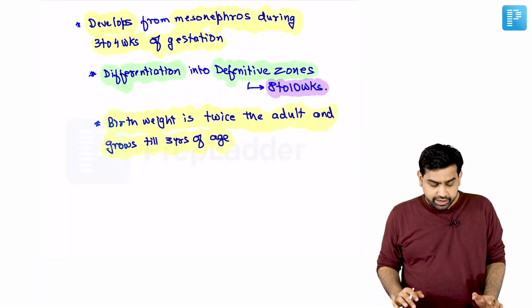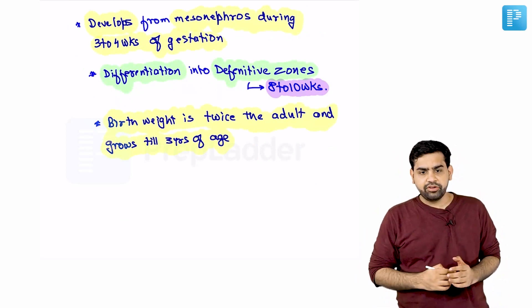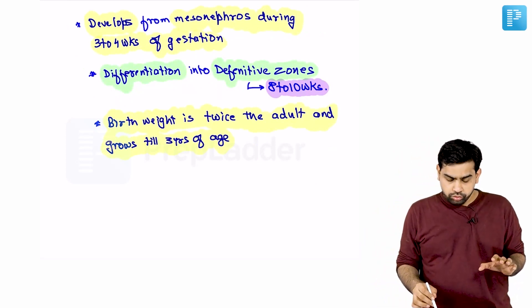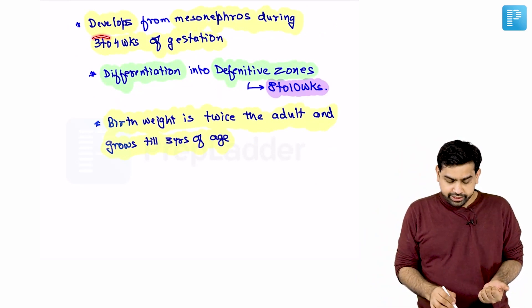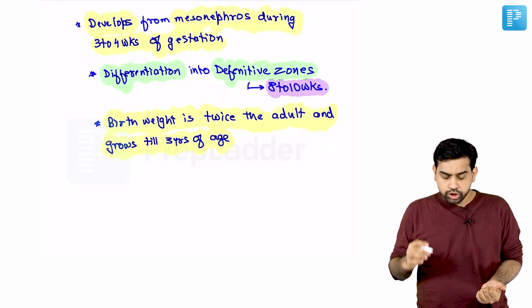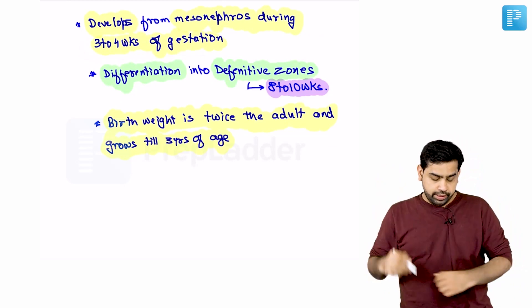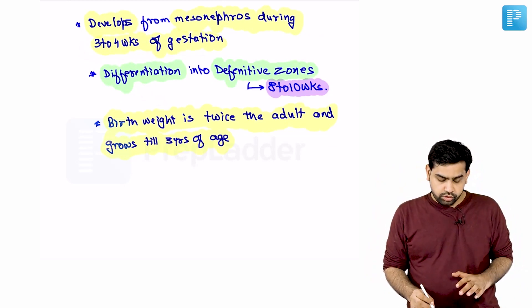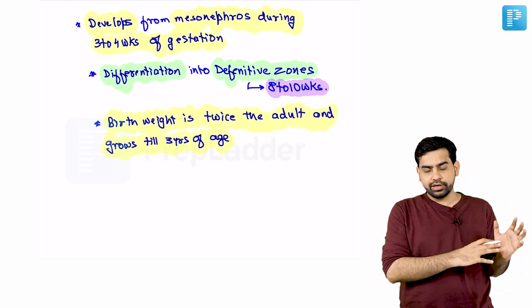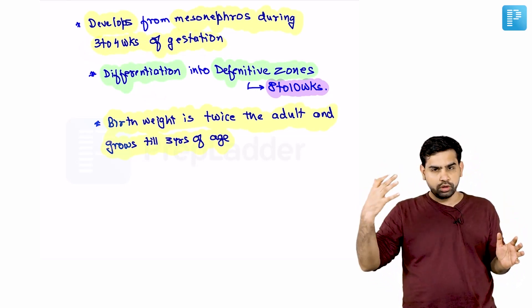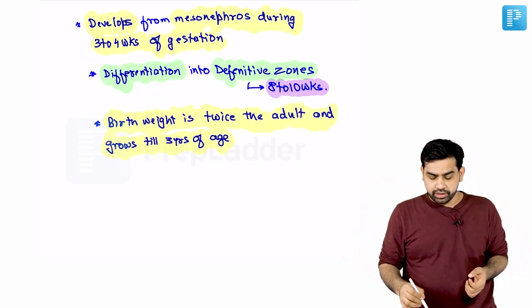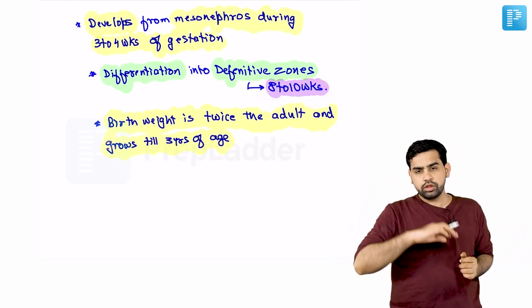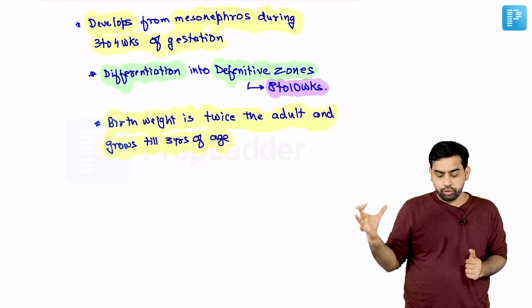The adrenal gland basically develops from the mesonephros. Adrenal gland development takes place from the mesonephros around the third to fourth week of gestation. The differentiation of the adrenal gland into the different zones — glomerulosa, reticularis, and fasciculata — is basically completed by the eighth to tenth week. So this zonulation is completed at around eight to tenth week.